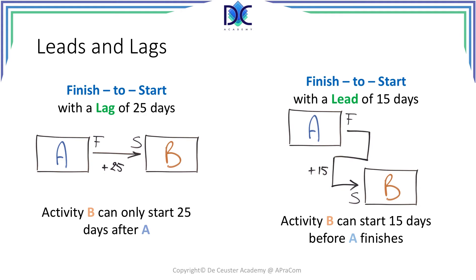An example is the curing of concrete. You typically have to wait 28 days before you can work on the newly poured concrete, so we add a lag of 28 days. Another example would be putting a primer on a wall and having to wait 24 or 48 hours to add the first paint layer.